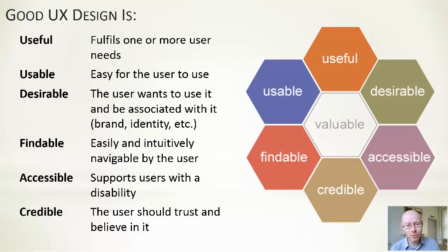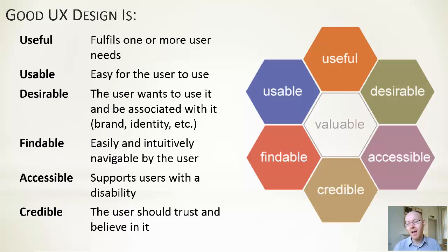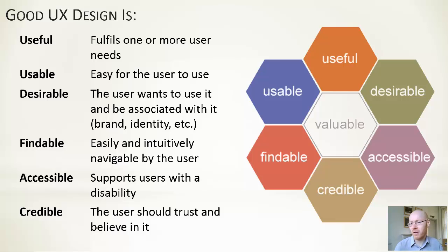Findable is the next element — similar to usable in some ways, but it links to the idea that when users are trying to find information or discover how to do something, it should be convenient and easy. Accessible ties into the notion that software is generally created for a large user audience; there will be people with different types of disability or impairment, and we want to design software that caters across that targeted audience. Credible is the last one: users should trust and believe in the software — it should be reliable, and if they're entering information or asking it to look something up, they should be content that the information it provides is something they can believe in and trust.